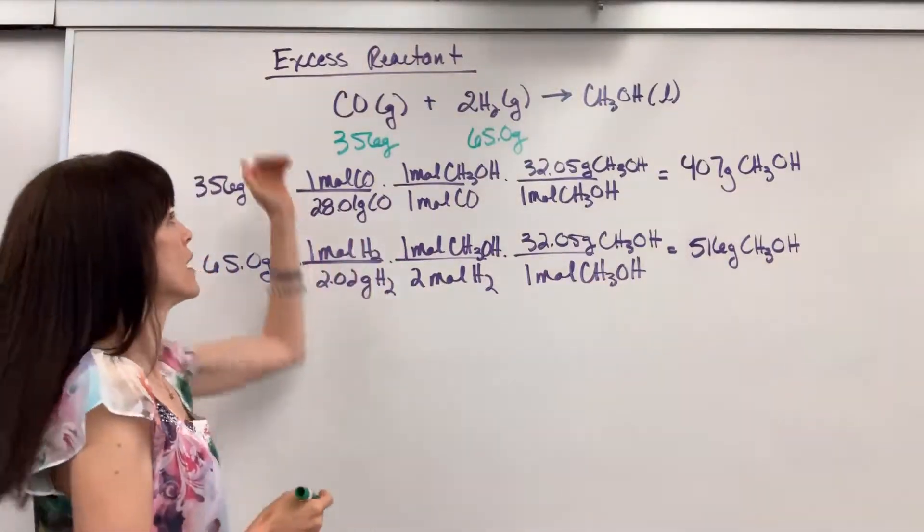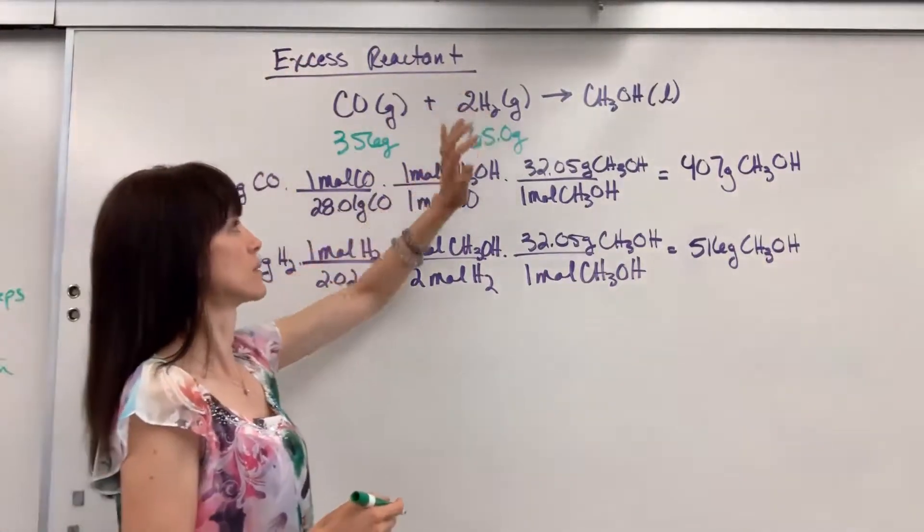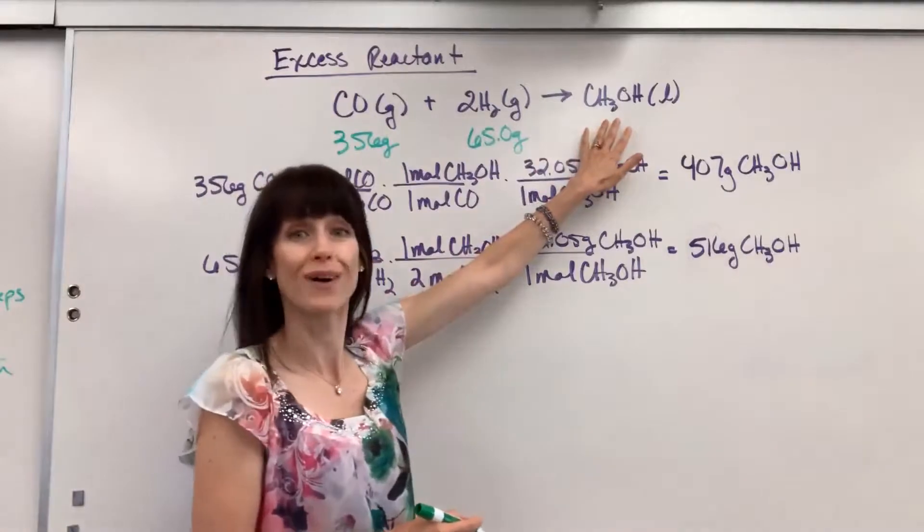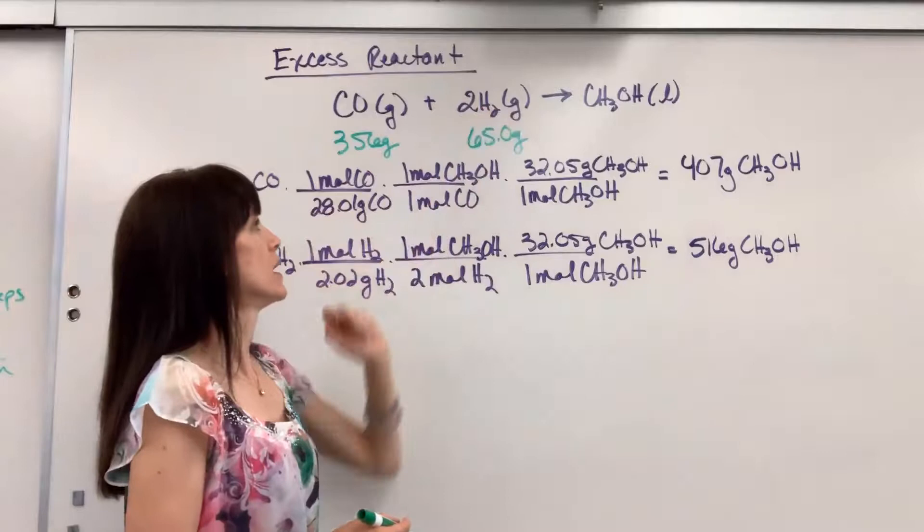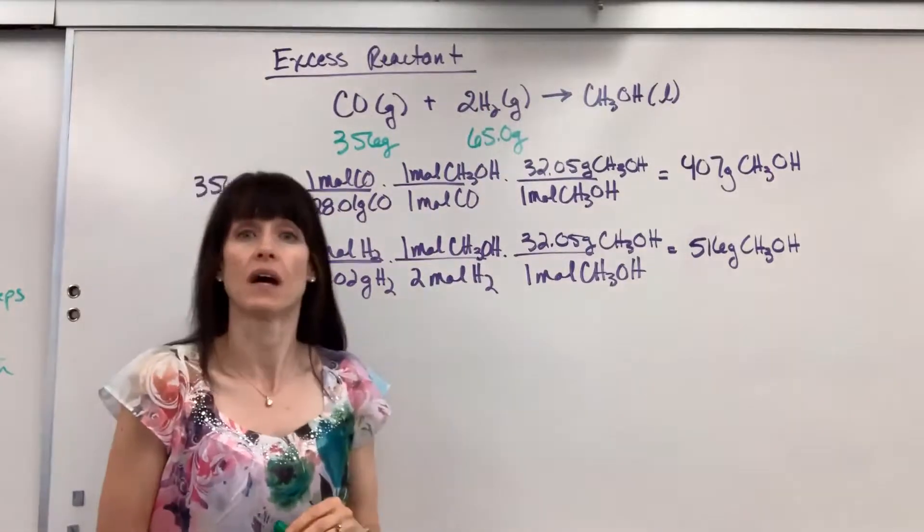So here's how we begin. We have carbon monoxide reacting with hydrogen gas and it's going to produce methanol. We have 356 grams of carbon monoxide and 65 grams of hydrogen.